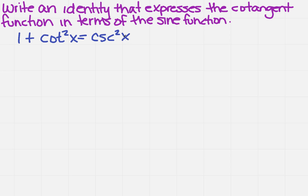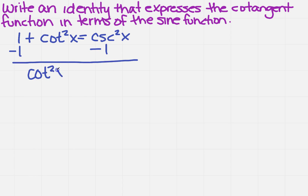So if we want to get this in terms of a sine function, we need to get the cotangent by itself. I'm going to subtract 1 from both sides, and that's going to give me cotangent squared of x equals cosecant squared of x minus 1.